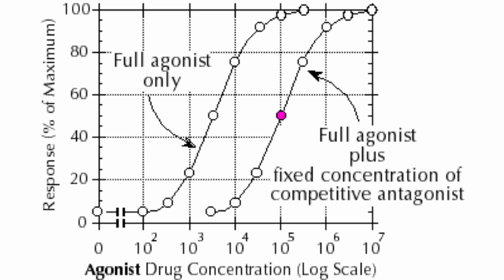Now, if we look at this graph, we can see the sigmoid curve of the dose-response from the agonist.